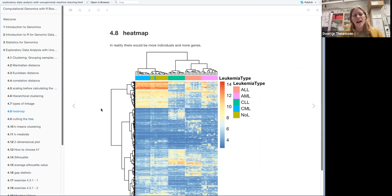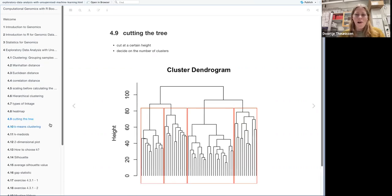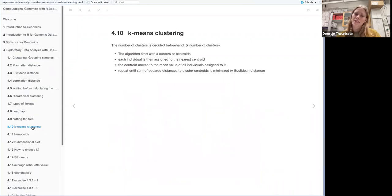But then the question is, how do you cut your tree to decide how many clusters you have? So we have two methods of cutting your tree. You can cut at certain height, what they did on the picture here, and then you end up with four clusters or you can decide how many clusters you have and then start from there. And the next part is about that where you decide your number of clusters.